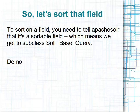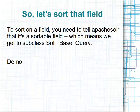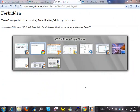Running a bit long, but if you want to do something interesting like allowing people to sort on a field, you need to tell Apache Solr about the field being sortable — which means we get to play around with subclassing a Solr base query class. The nice thing about the Apache Solr module is that all the things it uses to talk to Solr are classes, and moreover which class it tries to load to do these operations is controlled by a line in the variables table.